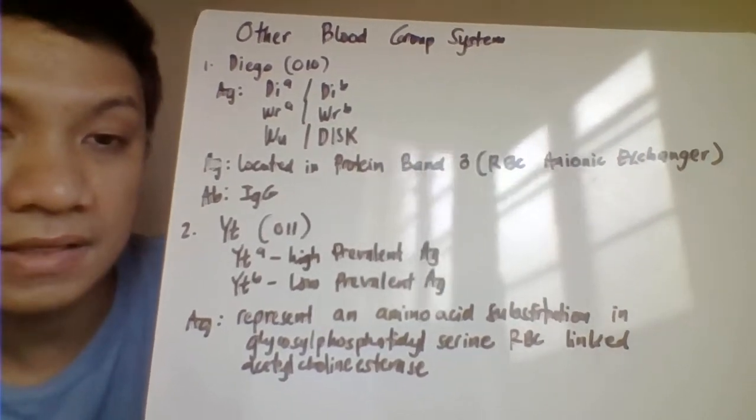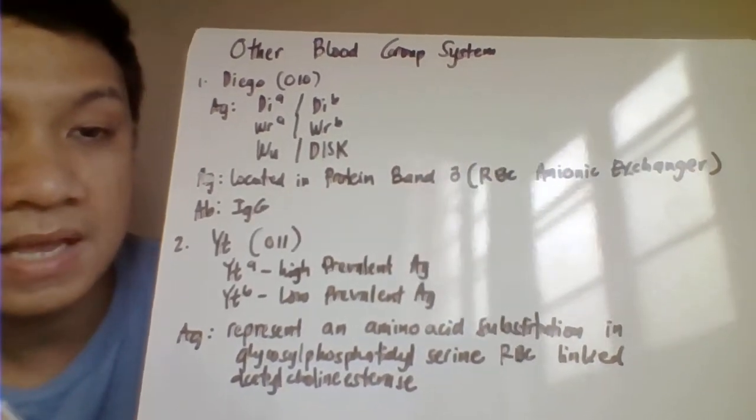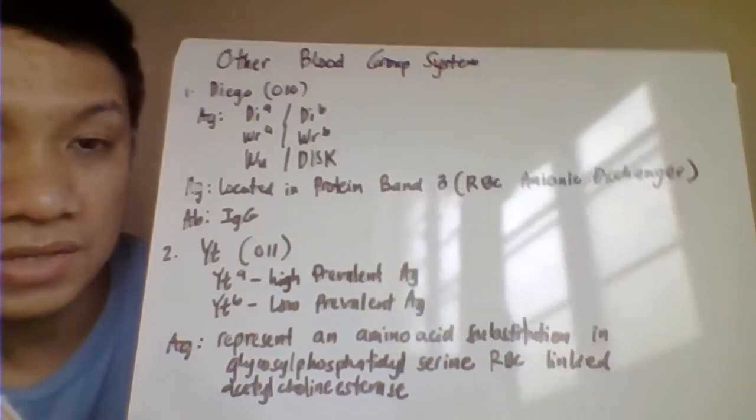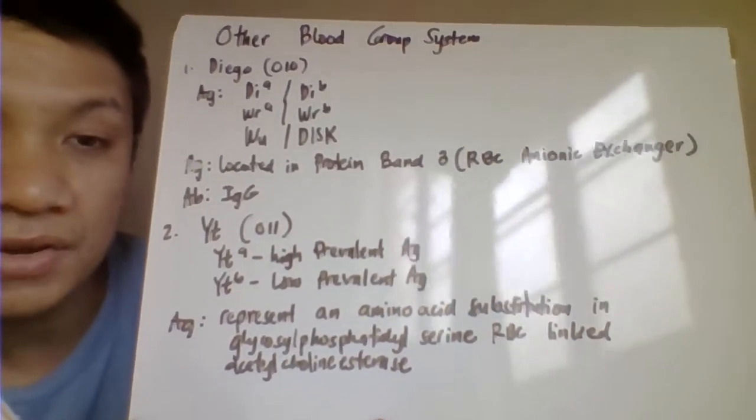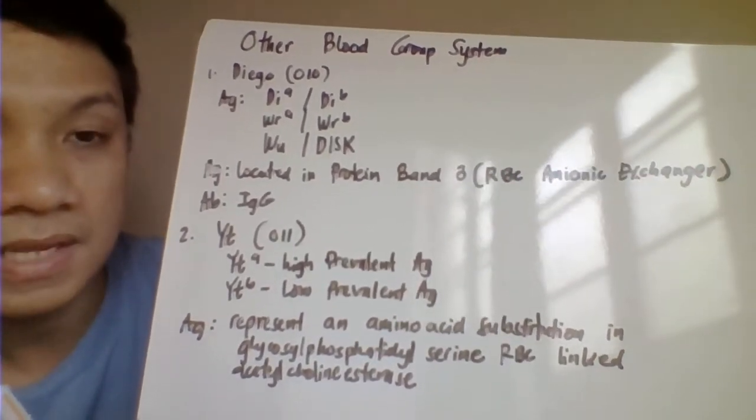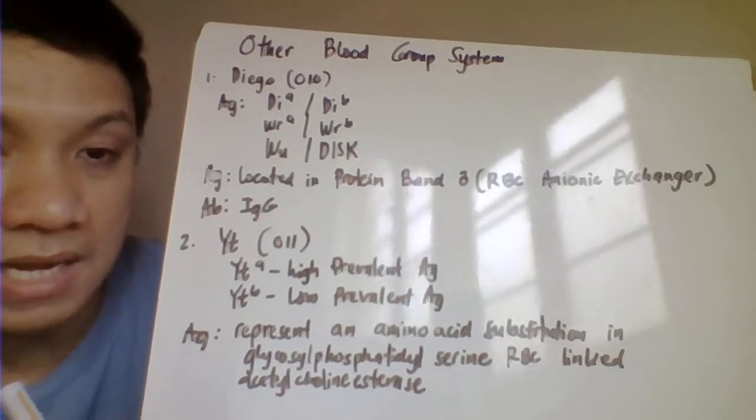For the Kidd blood group system, this includes your antigens Kidd A, Kidd B, JK A, JK B, and we have your weak antigens. The antigen of your Kidd blood group system can be found here in your RBC protein band 3.